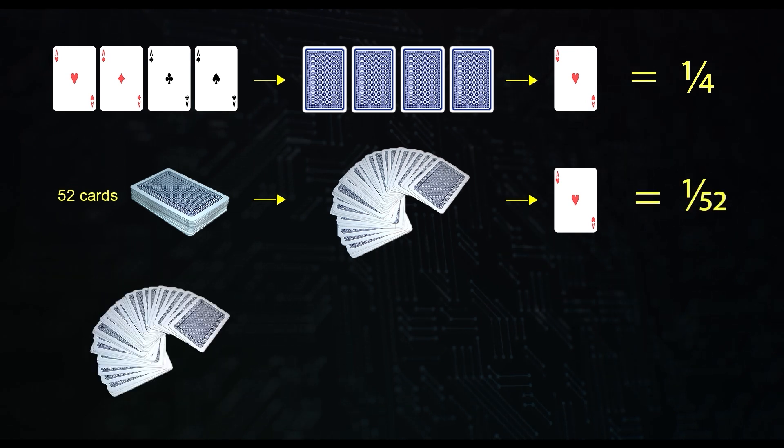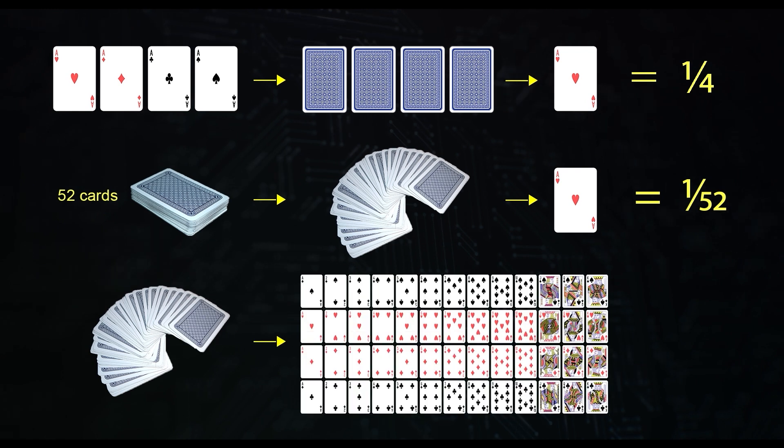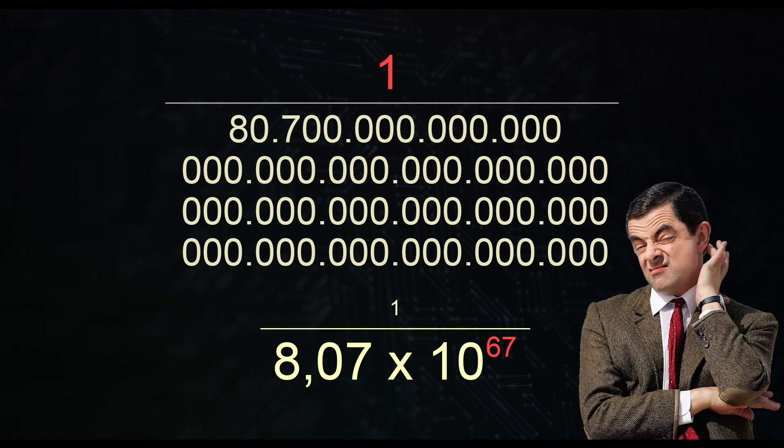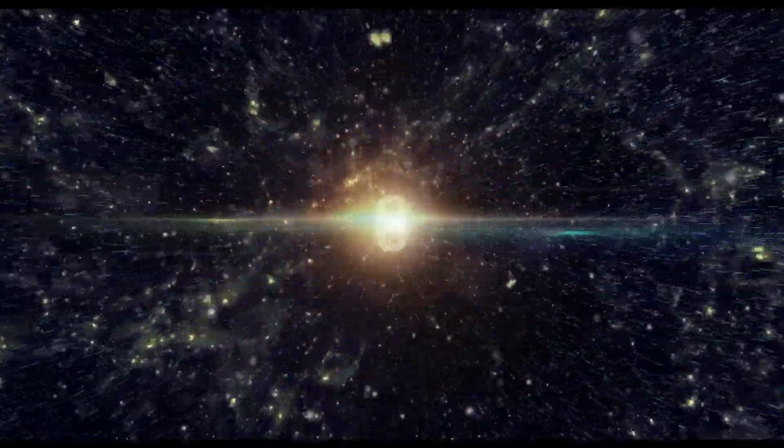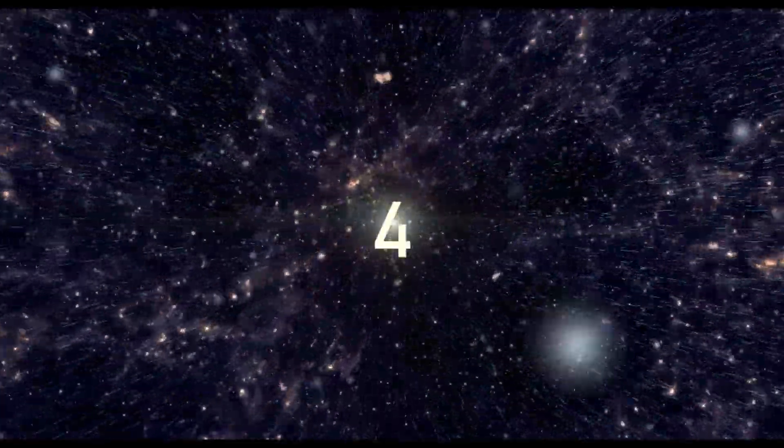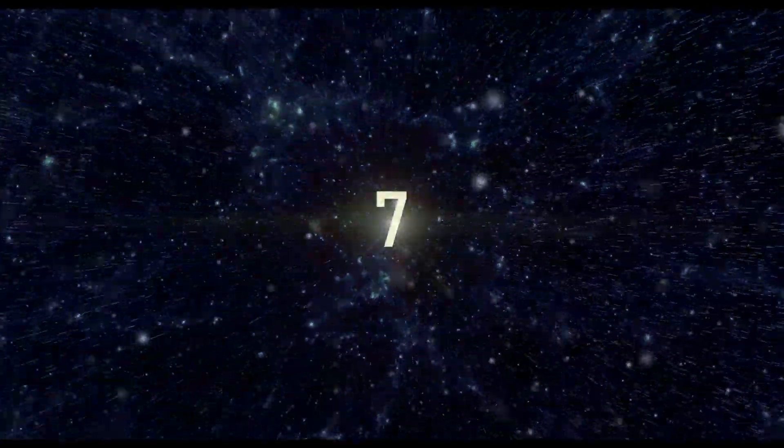But if we want to draw all the cards of the same deck in this precise sequence, the odds will drop to 1 in 80 million, 700 thousand, trillion, trillion, trillion, trillion. A number to the power of 67. A figure greater than the number of all planets in the universe. Since the time of the Big Bang, 13.8 billion years ago, if an attempt was made every second to pick that sequence of cards randomly, the calculation would continue today and for millions of years to come.